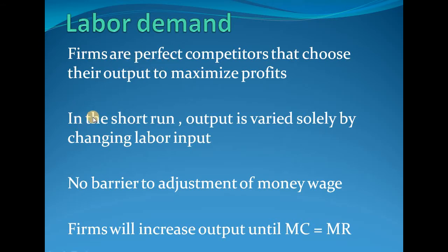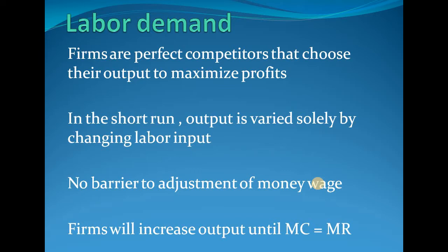The second assumption is that in the short run, output is varied solely by changing the labor input. We have already studied that labor is a variable input, so output varies directly with the amount of labor employed. The third assumption is there is no barrier to adjustment of money wage — meaning money wages are quite flexible. If there are many people seeking work, money wages will fall and people will return to employment.